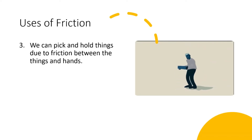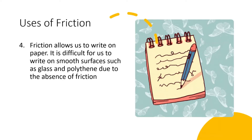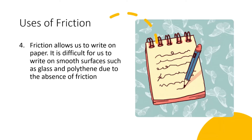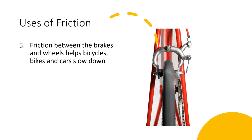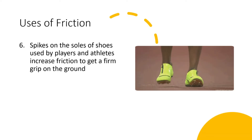We can pick and hold things due to friction between the things and our hands. Friction allows us to write on paper. It is difficult for us to write on smooth surfaces such as glass and polythene due to the absence of friction. Friction between the brakes and wheels helps bicycles, bikes, and cars to slow down. Spikes on the soles of shoes used by players and athletes increase friction to get a firm grip on the ground.